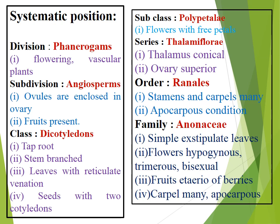Systematic position: Division — Phanerogames (flowering vascular plants). Subdivision — Angiospermae (ovules enclosed in ovary, fruit present). Class — Dicotyledons (taproot, stem branched, leaves with reticulate venation, seeds with two cotyledons). Subclass — Polypetalae (flowers with free petals). Series — Thalamiflorae (thalamus conical, ovary superior). Order — Ranales (stamens and carpels many, apocarpous condition). Family — Annonaceae (simple exstipulate leaves, flowers hypogynous, trimerous, bisexual, fruit etaerio of berries).